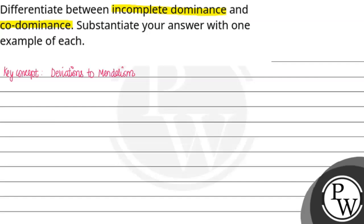Incomplete dominance and co-dominance are deviations to Mendel's laws. So first of all, if we talk about incomplete dominance, and here we will also talk about co-dominance.